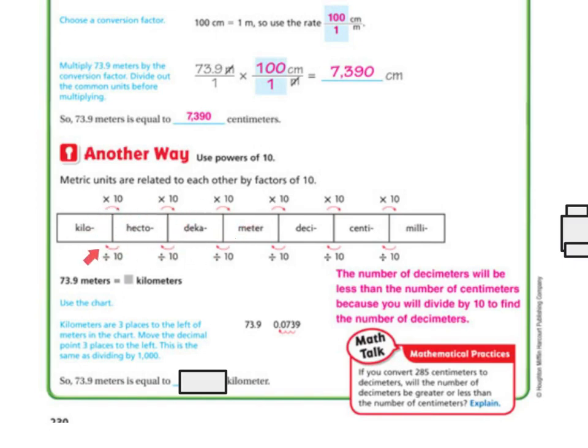So the kilometers are three places to the left of meters. There's meters: one, two, three. So that means I'm going to move my decimal over three times. So there's my decimal: one, two. There's not a number there, so I have to add a zero and move it over one. So that's what I did here. I started here. I went one, two, added my zero, three. So the answer is going to be 0.0739.